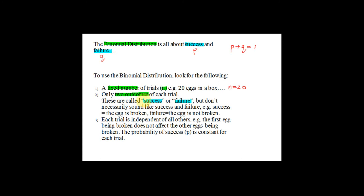There are two outcomes: either success or failure. But success and failure don't necessarily sound positive or negative. For example, success could equal the egg being broken, and failure is the egg not broken. So you have two outcomes — either success (the egg is broken) or failure (the egg is not broken).